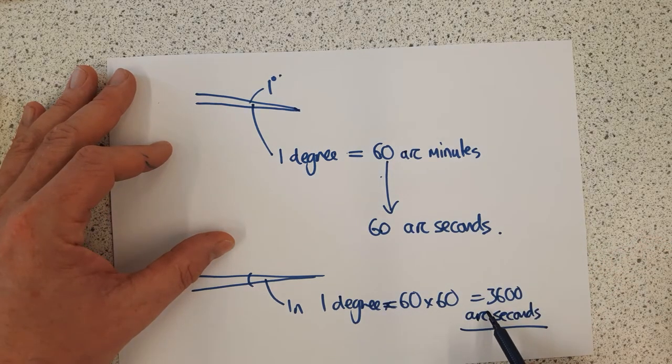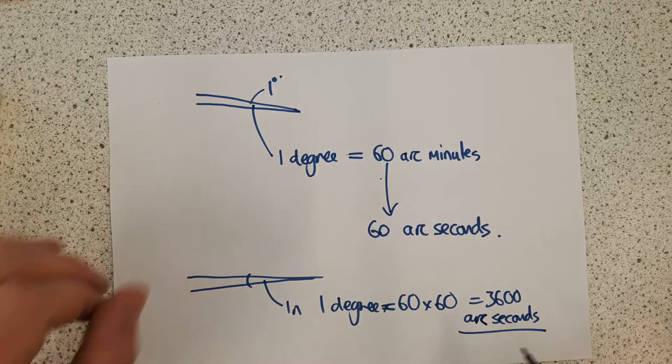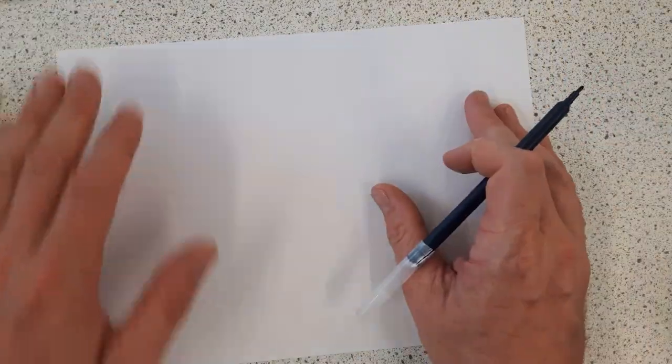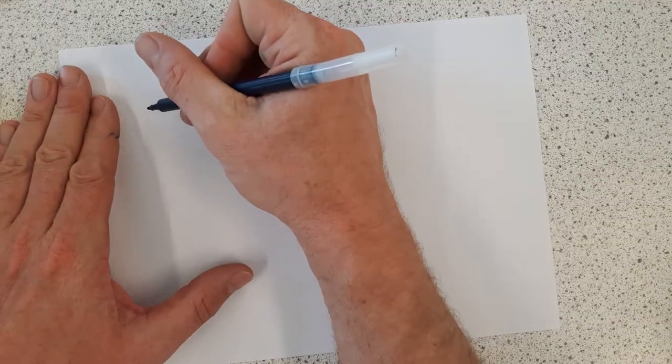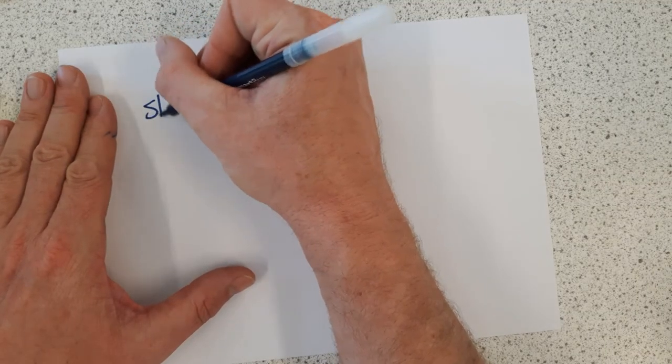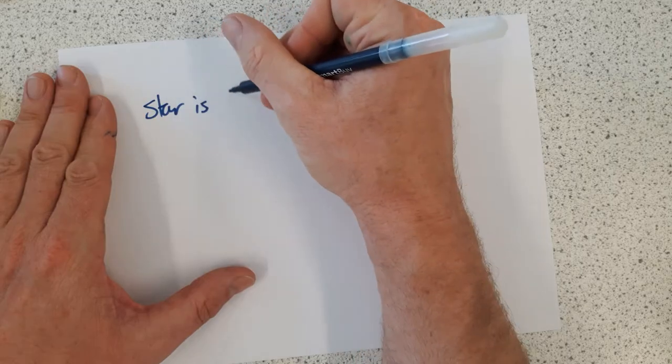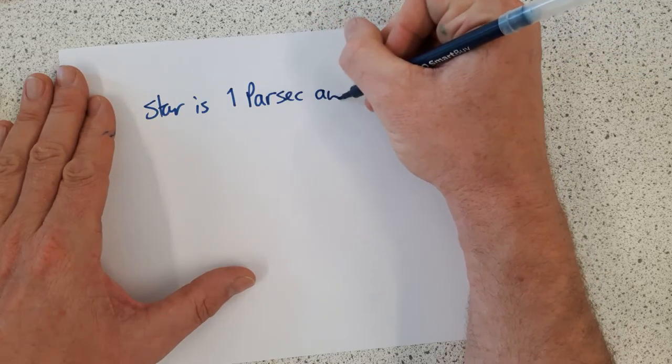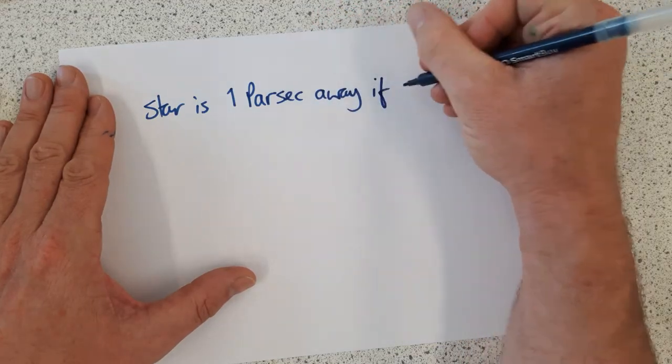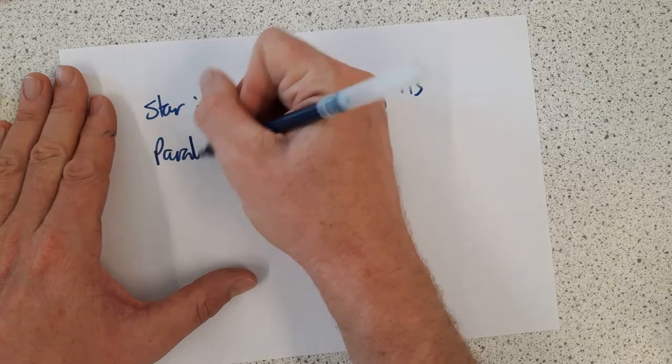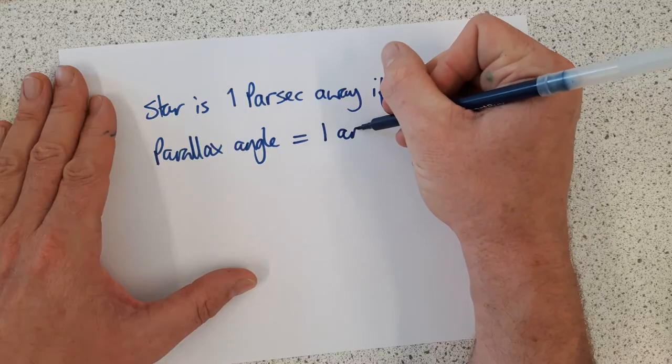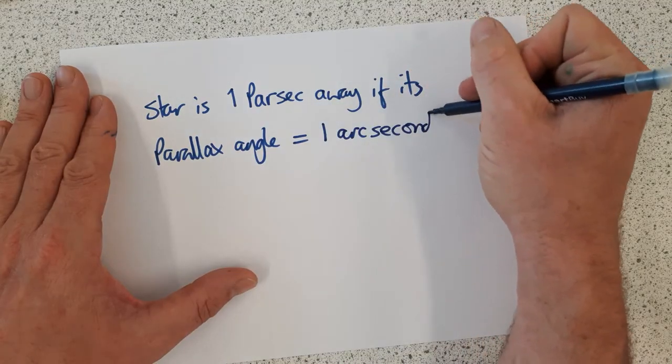We need to use this unit of arc seconds in order to consider how we measure distances to stars using parallax. One unit of distance that we use is as follows: a star is one parsec away if its parallax angle equals one arc second.